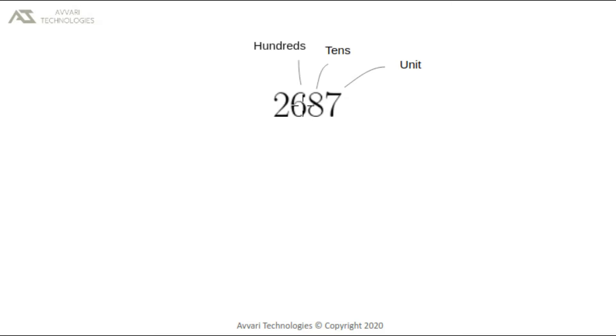Let us take a four-digit number, 2687. Seven is in the units place, eight is in the tens place, six is in the hundreds place, and two is in the thousands place.